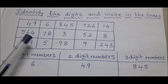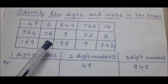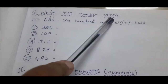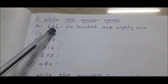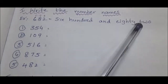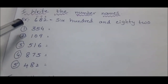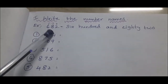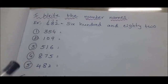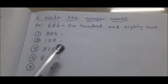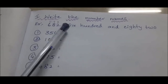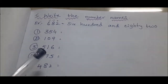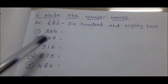Remaining numbers you identify and write under suitable headings. Next topic: write the number names. Example 682. You read or write the last two digits according to their value. Remaining all, follow the example.